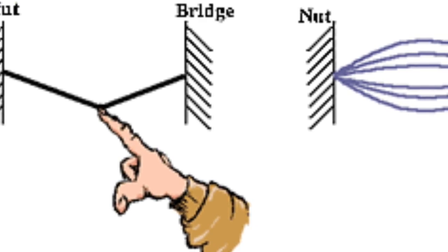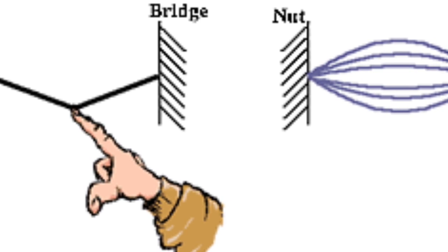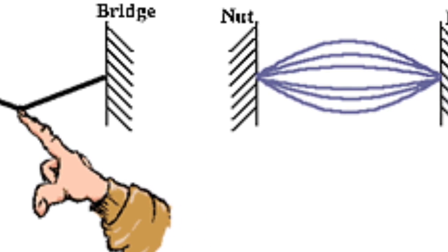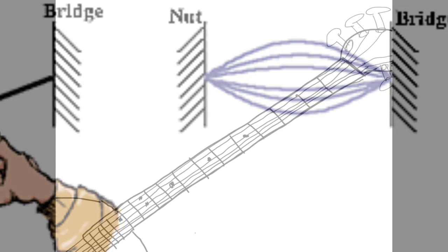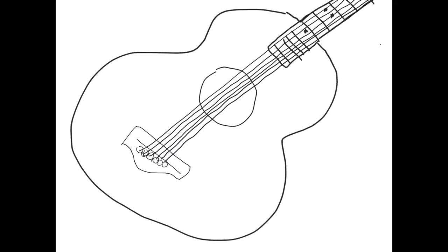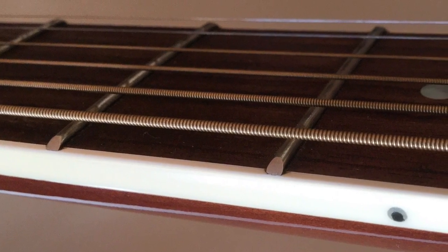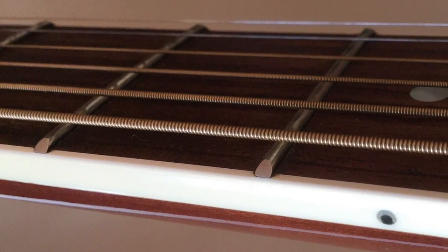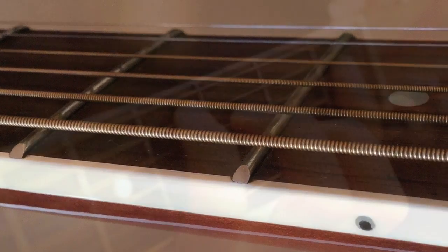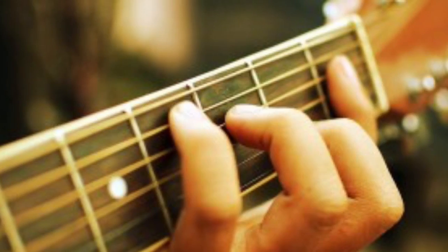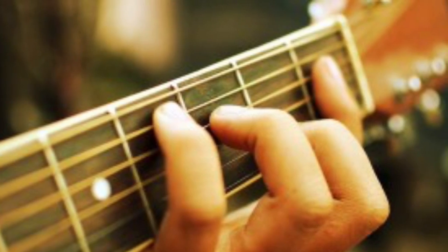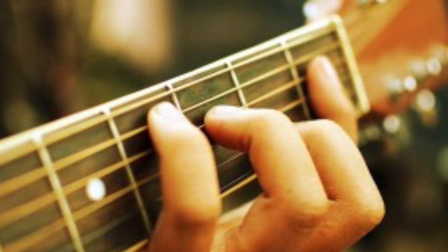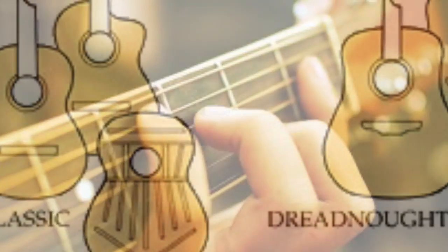Each string is pulled taut, stretching the material of the string and changing the vibration it makes when it's plucked. Across the neck of the guitar, there are metal strips embedded into the wood of the neck called the frets. These make it so that when a string is pressed, it shortens the length of the string that is vibrating and changes the sound that it makes.